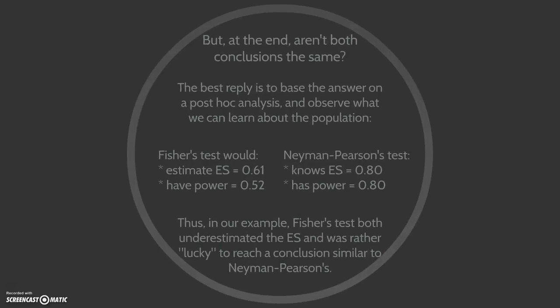So, at the end, aren't both conclusions the same, you may ask? The best reply is to base the answer on a post-hoc analysis and observe what we can learn about the population. Fisher's test would estimate the effect size to be 0.61 and have power of 0.50, while Neiman-Pearson's test knows that the effect size is 0.80 and has power of 0.80 as well. Thus, in our example, Fisher's test both underestimated the effect size and was rather lucky to reach a conclusion similar to Neiman-Pearson's.